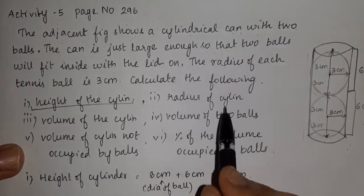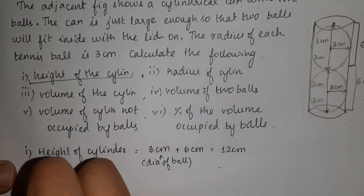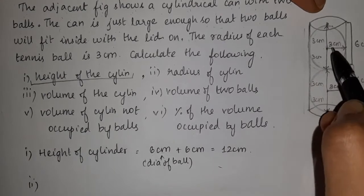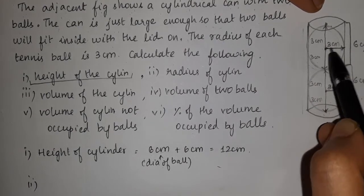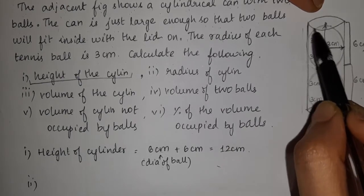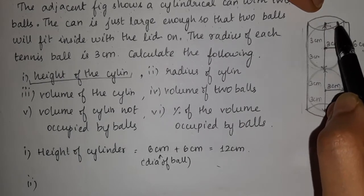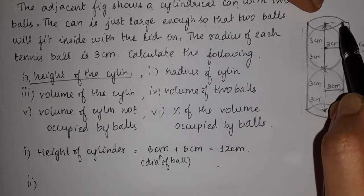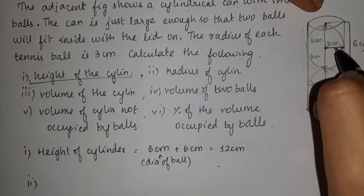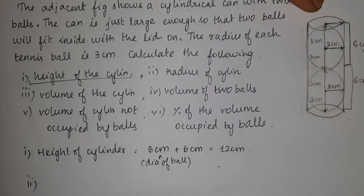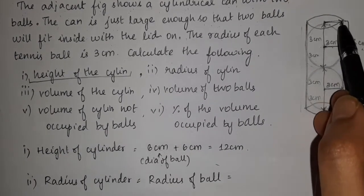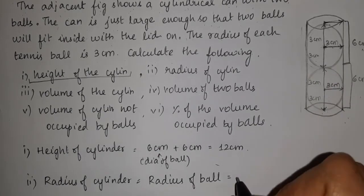The next question is the radius of the cylinder. We can see that the spherical ball has a radius of 3 cm. Since the ball fits exactly inside the cylinder, the base radius of the cylinder is also 3 cm. So the radius of the cylinder equals the radius of the ball, which is 3 cm.